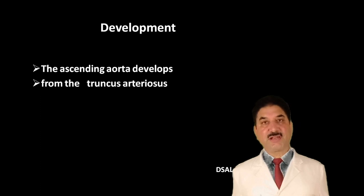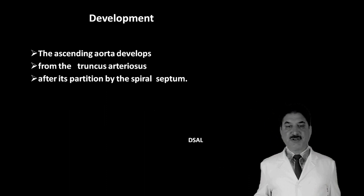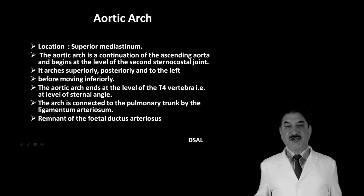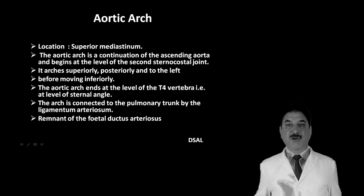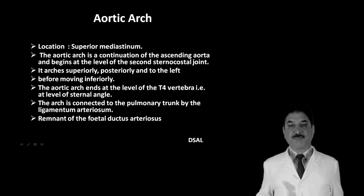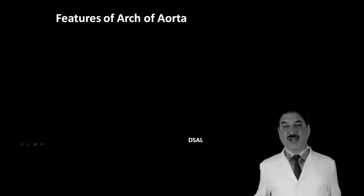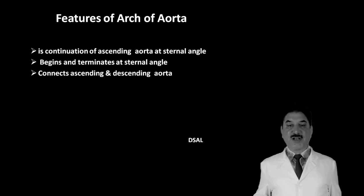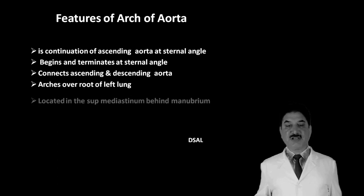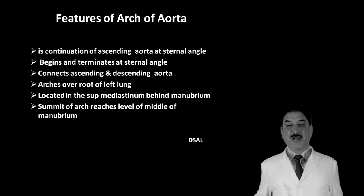Ascending aorta develops from truncus arteriosus after it is partitioned by the spiral septum. The arch of the aorta is located in the superior mediastinum. It is a continuation of the ascending aorta and begins at the level of the second sternocostal joint. It arches superiorly, posteriorly, and to the left, ending at the level of T4 — at the sternal angle anteriorly. The arch is connected to the pulmonary trunk by ligamentum arteriosum in the adult, which is a remnant of the fetal ductus arteriosus. The arch begins and terminates at the sternal angle, connects ascending and descending aorta, arches over the root of the left lung, and its summit reaches the level of the middle of the manubrium sterni.